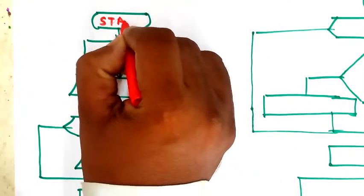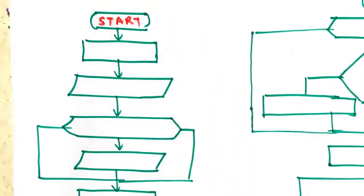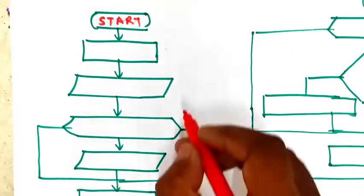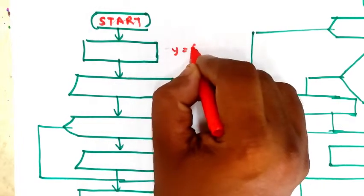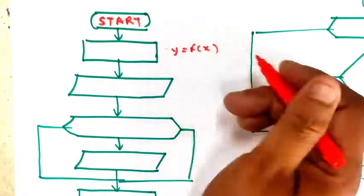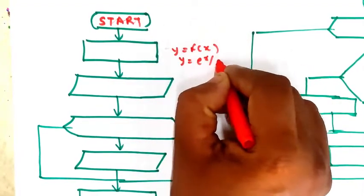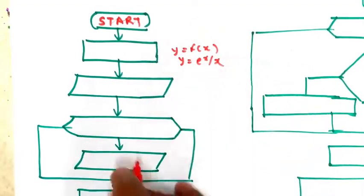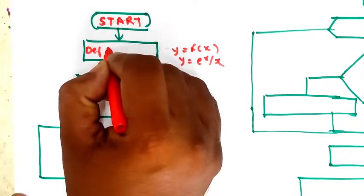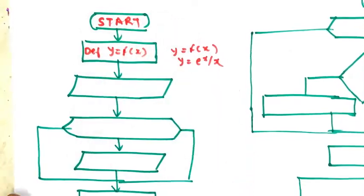We start the program, then the next step is to define the function, that is y equal to f of x. For example, y is equal to e raised to x. So we define the function y equal to f of x.